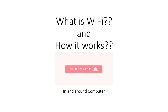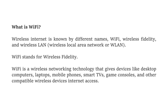In this video, we are going to see what is Wi-Fi and how it works. Wireless Internet is known by different names: Wi-Fi, Wireless Fidelity, and Wireless LAN. Wi-Fi stands for Wireless Fidelity. Wi-Fi is a wireless networking technology that gives Internet access to devices like desktops, laptops, mobile phones, and other wireless compatible devices.